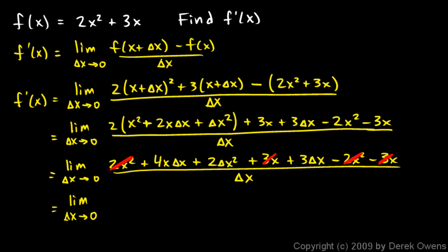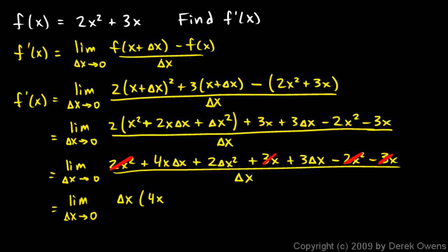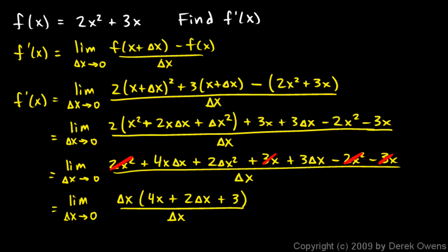We're left with the limit as delta x approaches 0. All remaining terms in the numerator have a delta x in them, so we factor it out: delta x times (4x + 2·delta x + 3), all over delta x. The delta x's cancel, leaving us with the limit as delta x approaches 0 of 4x + 2·delta x + 3. As delta x approaches 0, the 2·delta x term disappears.